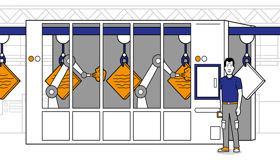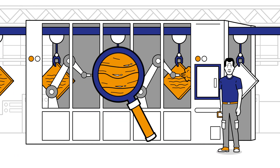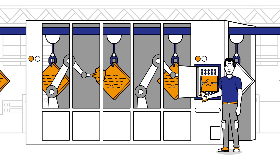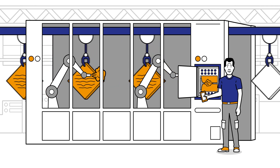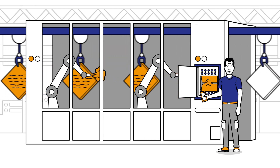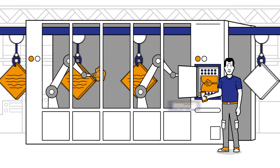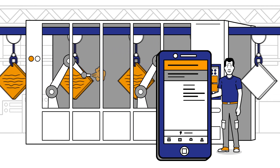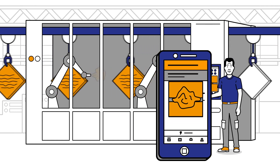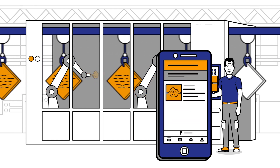Paul spots the problem immediately. The paint layer is uneven. He checks and finds an air filter in the exhaust is blocked with overspray. To avoid more severe damage, Paul creates a case and attaches a photo to it.